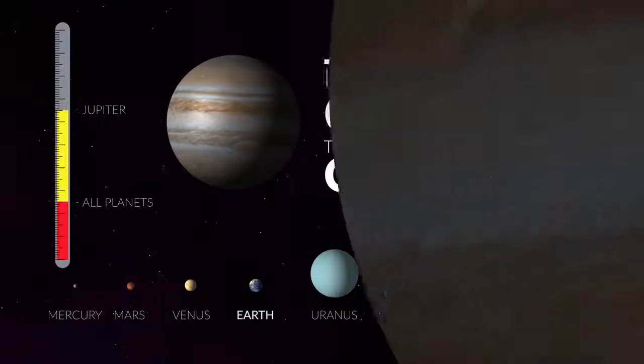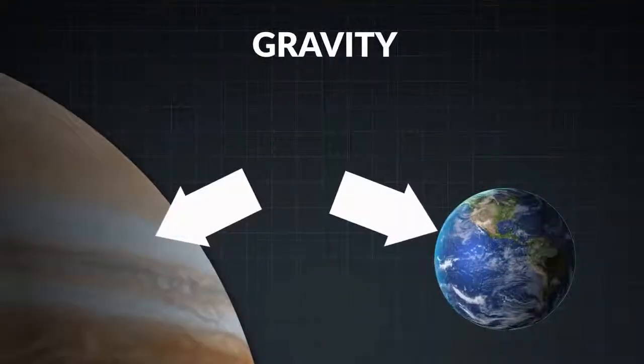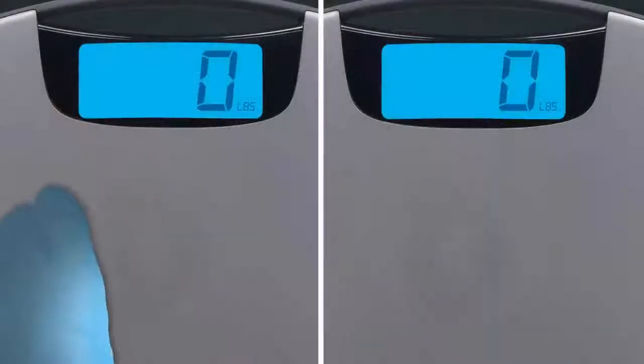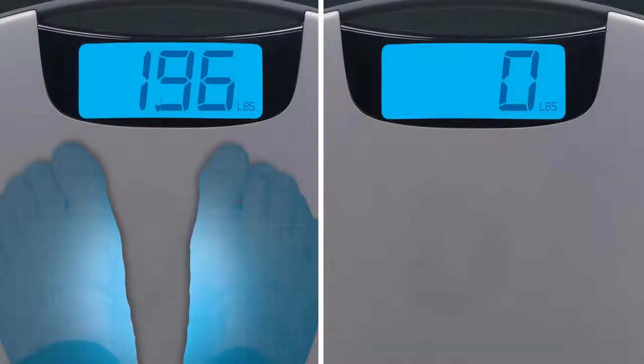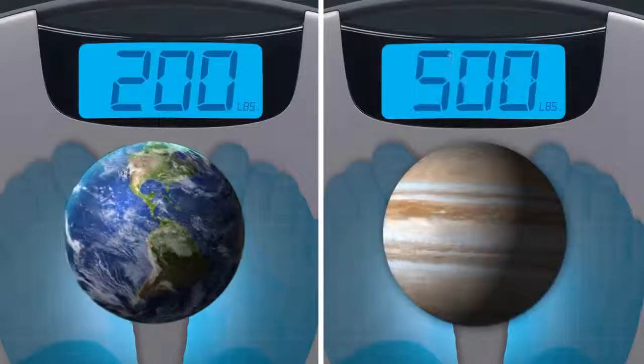Due to Jupiter's monstrous mass, the force of gravity you would feel at the top of Jupiter's atmosphere would be about two and a half times greater than here on Earth. This means that if you weigh 200 pounds on Earth, you would weigh 500 pounds on Jupiter.